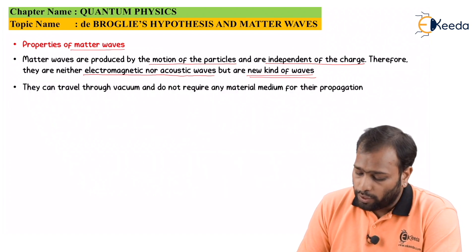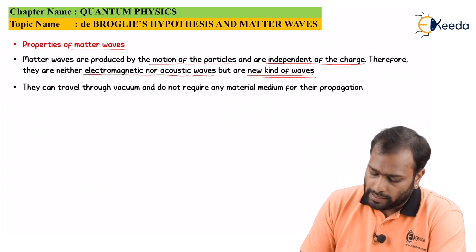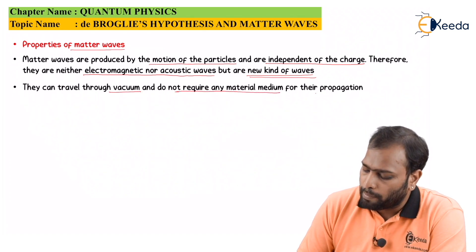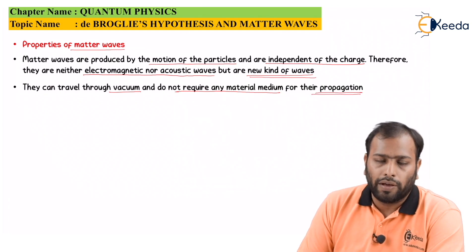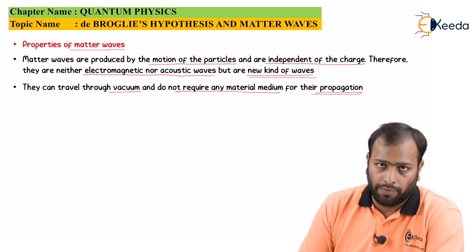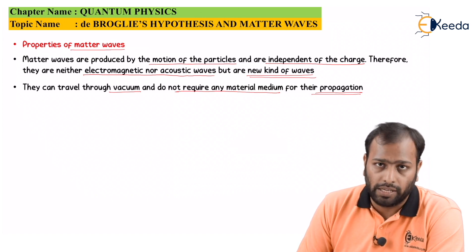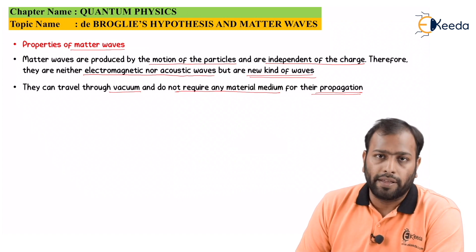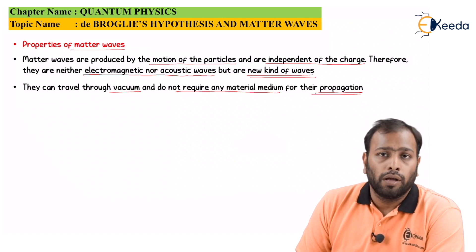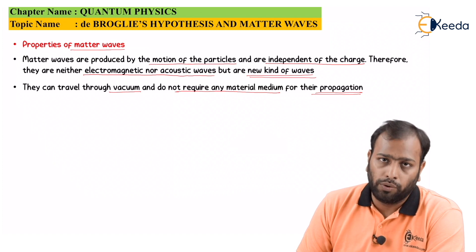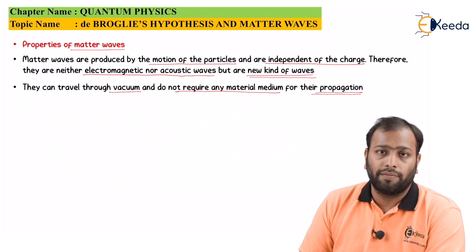Secondly, matter waves can travel through vacuum and do not require any material medium for their propagation. Even in vacuum, you can move with a velocity and your mass would never be zero. So λ will never be zero, and hence matter waves can travel through vacuum. This could be a tricky viva question: the answer is that even in vacuum, velocity never goes to zero, neither does mass, so λ is a non-zero quantity.